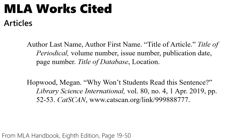Let's look at examples of citing different works. For articles, you start with the author's last name, comma, first name, period; then the title of the article in quotation marks, period, close quotes; then the title of the journal italicized, comma; volume number, comma; issue number, comma; publication date, comma; page number, period. If you're getting this from an electronic source, you continue with the title of the database, comma, and then the location. If you are missing a piece of information — for example, you can't find the issue number — just leave that blank and move to the next element.